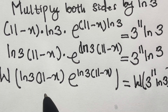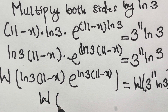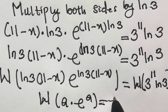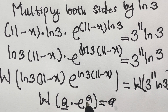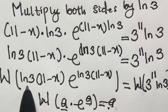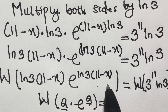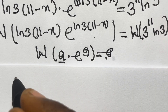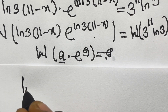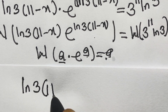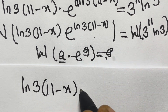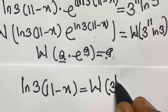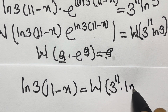Now we apply the Lambert W function. We have Lambert W function of ln 3 times 11 minus x times exponential ln 3 times 11 minus x, equals Lambert W function of 3 raised to the power 11 times ln 3. The Lambert W function of a multiplied by exponential a equals a. Since the base and power are the same, the Lambert W function gives us ln 3 times 11 minus x, equals Lambert W function of 3 raised to the power 11 times ln 3.